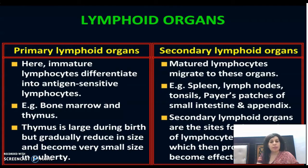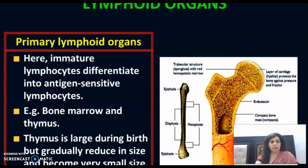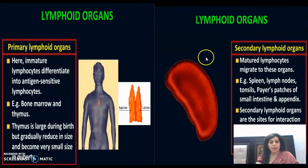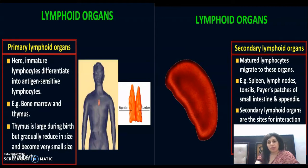Primary lymphoid organs में mature lymphocytes बनते हैं, और secondary lymphoid organs में यह migrate कर जाते हैं जहाँ यह अपना action दिखाते हैं। Primary lymphoid organs में आते हैं bone marrow और thymus। Thymus breast bone के पास होता है, heart के नीचे। यह birth के समय large होता है but gradually reduces in size and becomes very small in puberty.